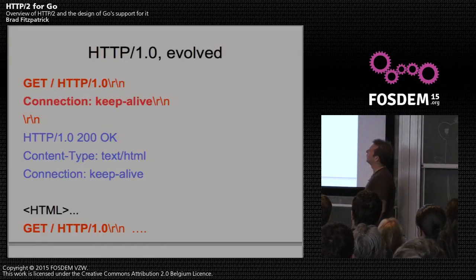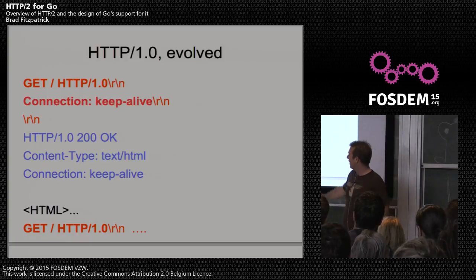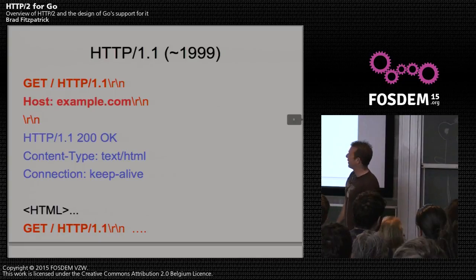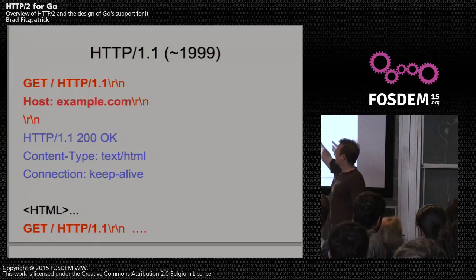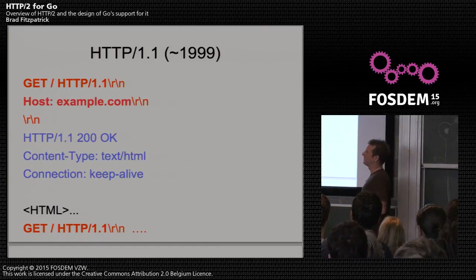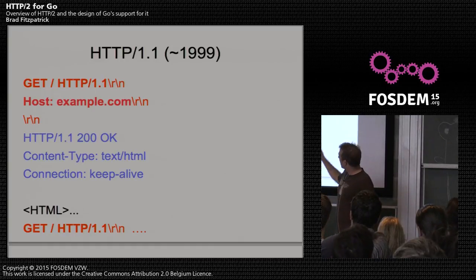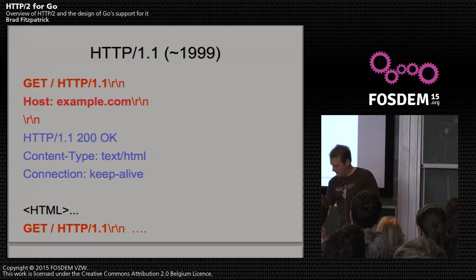HTTP 1.0 evolved slowly. They added keep-alive so you could opt in to not tearing down your TCP connection every time, and on the response the server would say this is a keep-alive. HTTP 1.1 made that implicit — all connections are keep-alive unless you opt out with 'connection close.' You also had to say what hostname you're talking to, solving the IPv4 shortage and enabling virtual hosting with one IP for hundreds of customers. So from around 1999, that's basically where we've been.